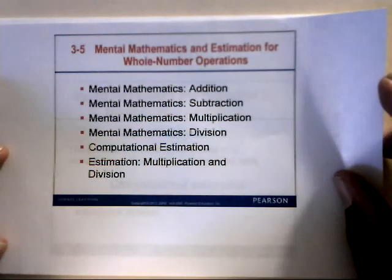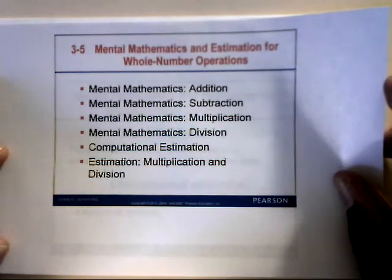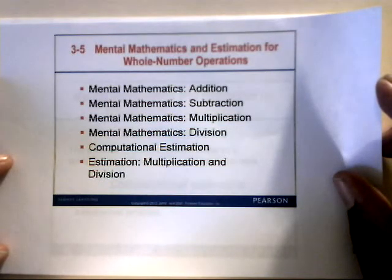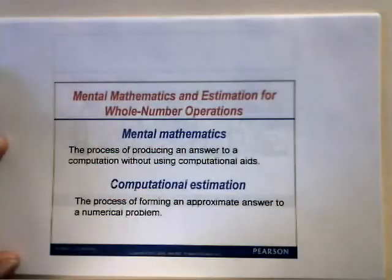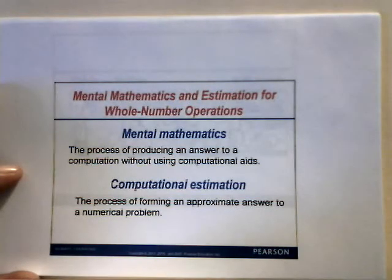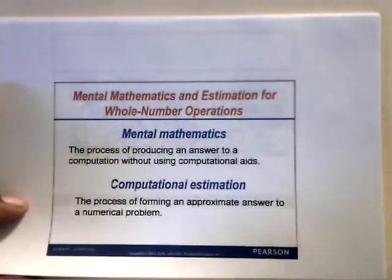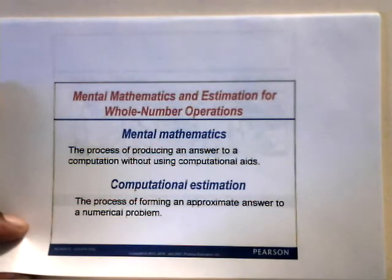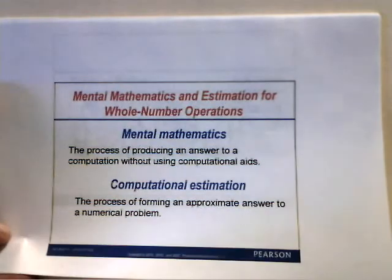In this video we're going to be looking at mental mathematics and estimation for whole number operations. We'll be looking at mental mathematics for addition, subtraction, multiplication, and division, as well as computational estimation and estimation with multiplication and division. Mental mathematics is the process of producing an answer to a computation without using computational aids — basically using your brain to compute problems without a calculator. Computational estimation is the process of forming an approximate answer to a numerical problem.